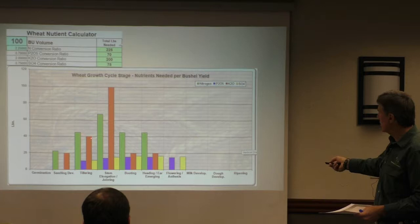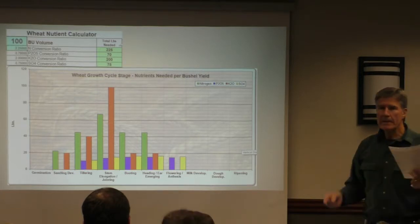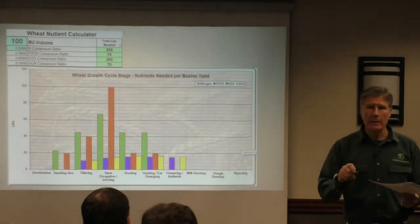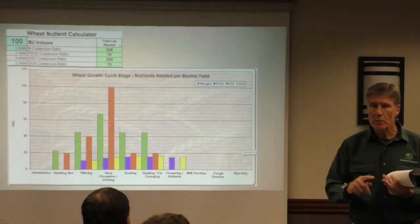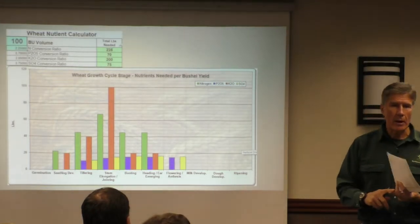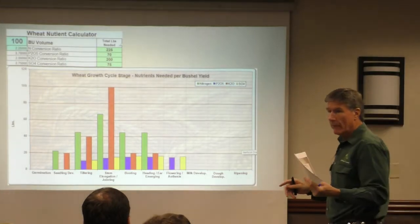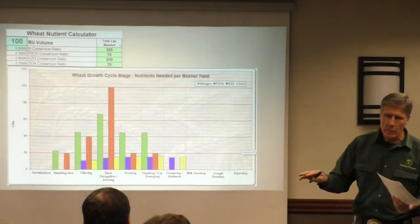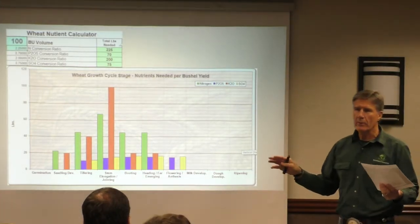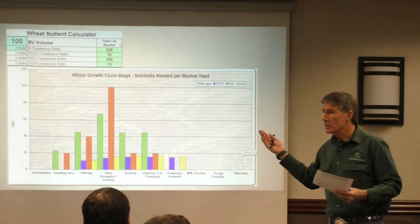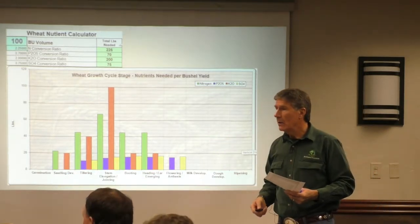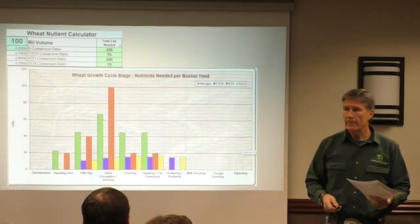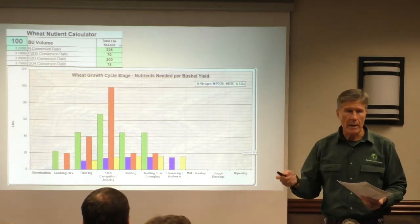At this point our phosphate doesn't come in until tillering, we have a little sulfur, but we have more nitrogen and potassium. Look at stem elongation — this is common in almost all plants we've looked at: corn, soybeans, wheat, barley, everything. Alfalfa is the same way — you usually cut it for feed before it goes to seed.